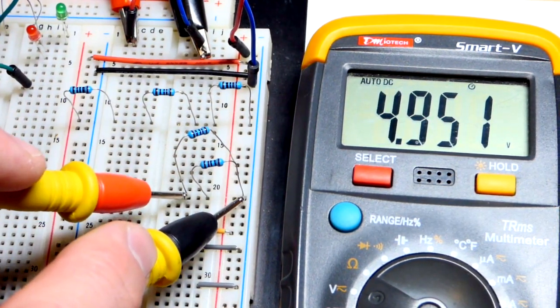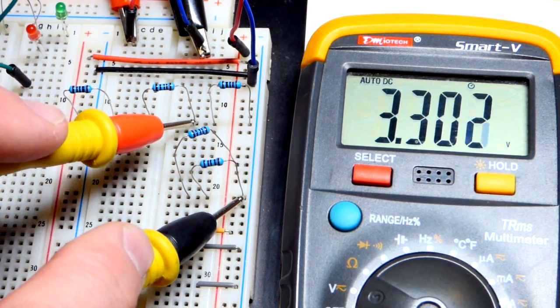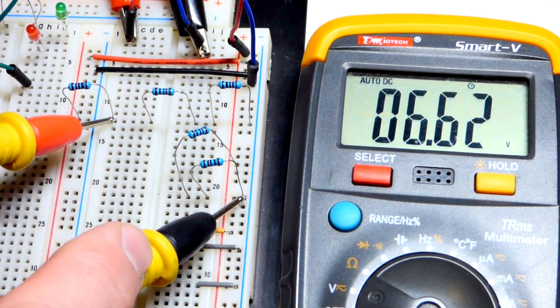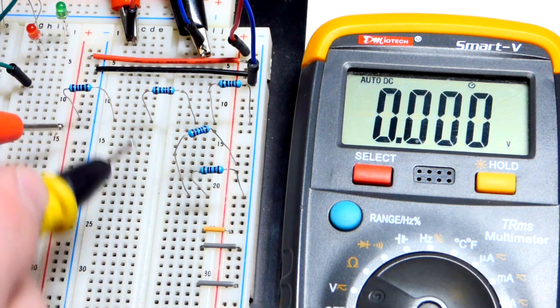So our voltage dividers, since they're fixed, will also double. There we have one-third of 10 and then two-thirds of 10. Of course nine volts would give us three and then six, and then 4.5.